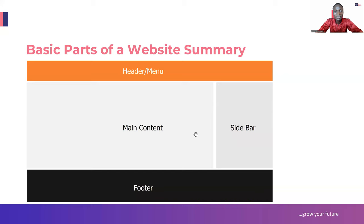This is just a summary of the parts of the website: the header, the main content, and the footer. Some websites also have sidebars - sidebars are just to show some other content that is available on the website. You will get to know more about that as we progress.